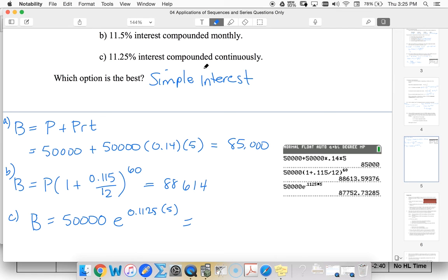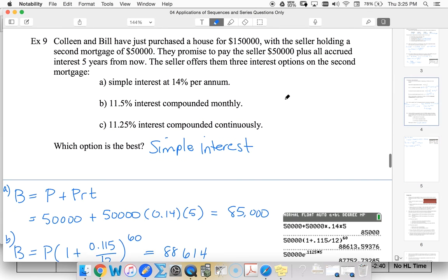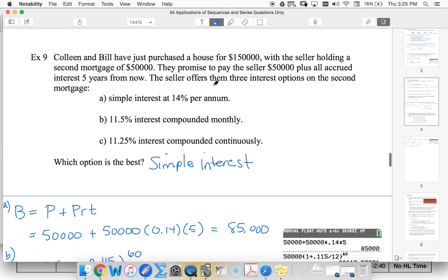Because we want to pay back the least amount of money. Of course, the sellers would rather they pick option B, but as the people paying, you want to pick the cheapest one.